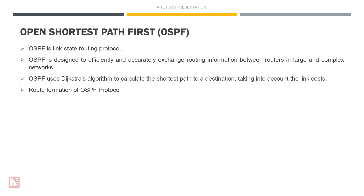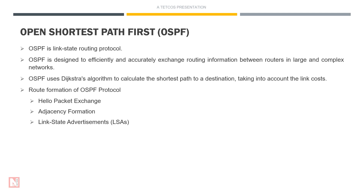Step 1: Hello Packet Exchange — OSPF-speaking routers send hello packets on all OSPF-enabled interfaces, and routers become neighbors if they agree on specific parameters in these hello packets. Step 2: Adjacency Formation — adjacencies, virtual point-to-point links, are established between certain neighbors based on router and network types determined during hello exchanges. Step 3: Link State Advertisements (LSAs) — routers send LSAs over adjacencies describing their links, neighbors, and link states. Step 4: LSA Propagation — each router receiving an LSA stores it in its link state database and shares a copy with all other neighbors. Step 5: Database Synchronization — through LSA flooding, all routers create identical link state databases within an area.